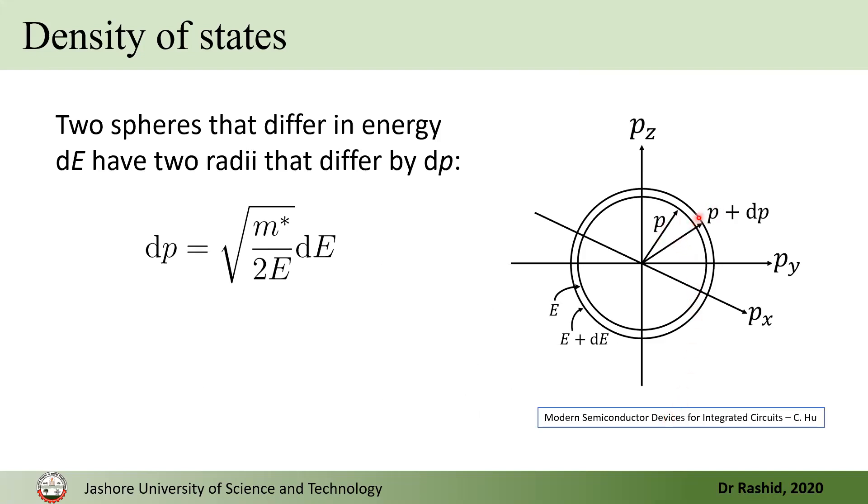So, the dP is related to the dE with this expression. Now, if we calculate the volume of this shell, this would be 4 pi P square multiplied with dP. That is the circumference of the sphere multiplied with this increment dP.